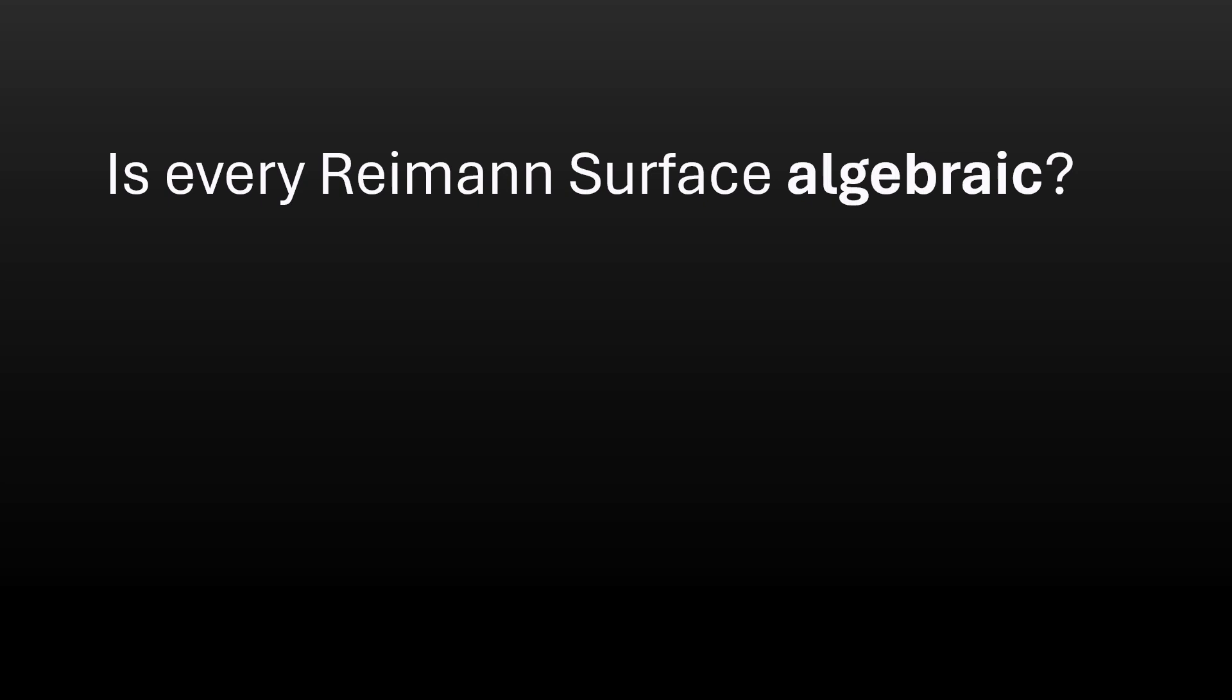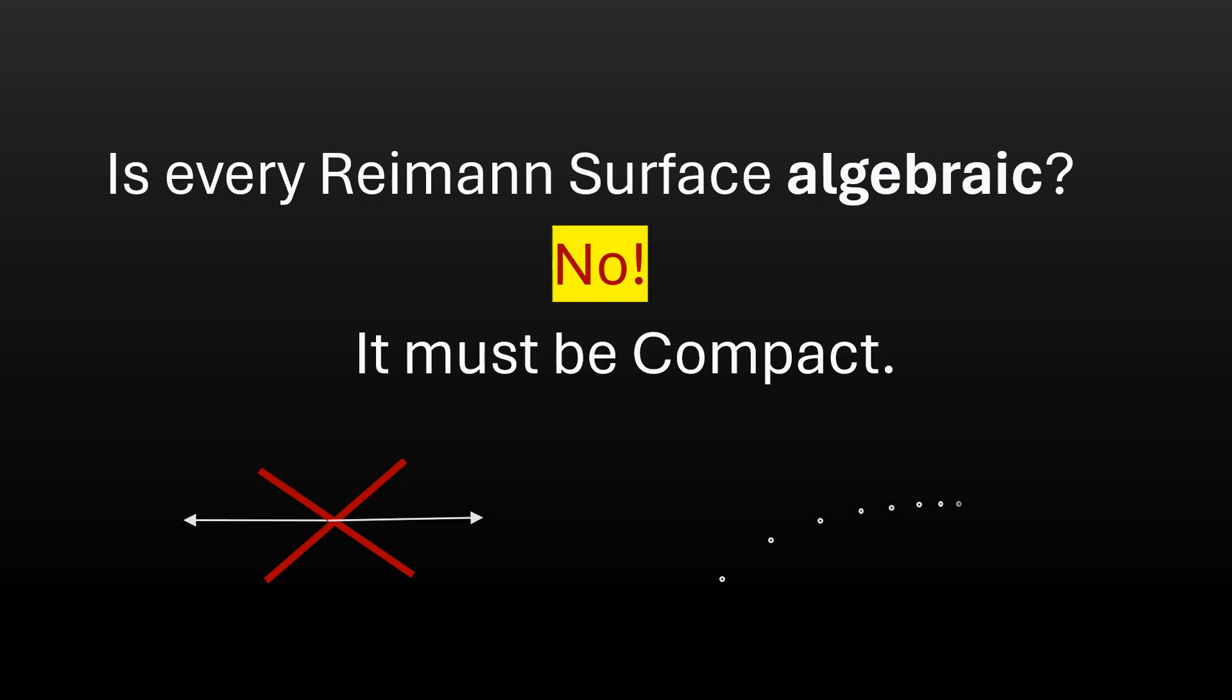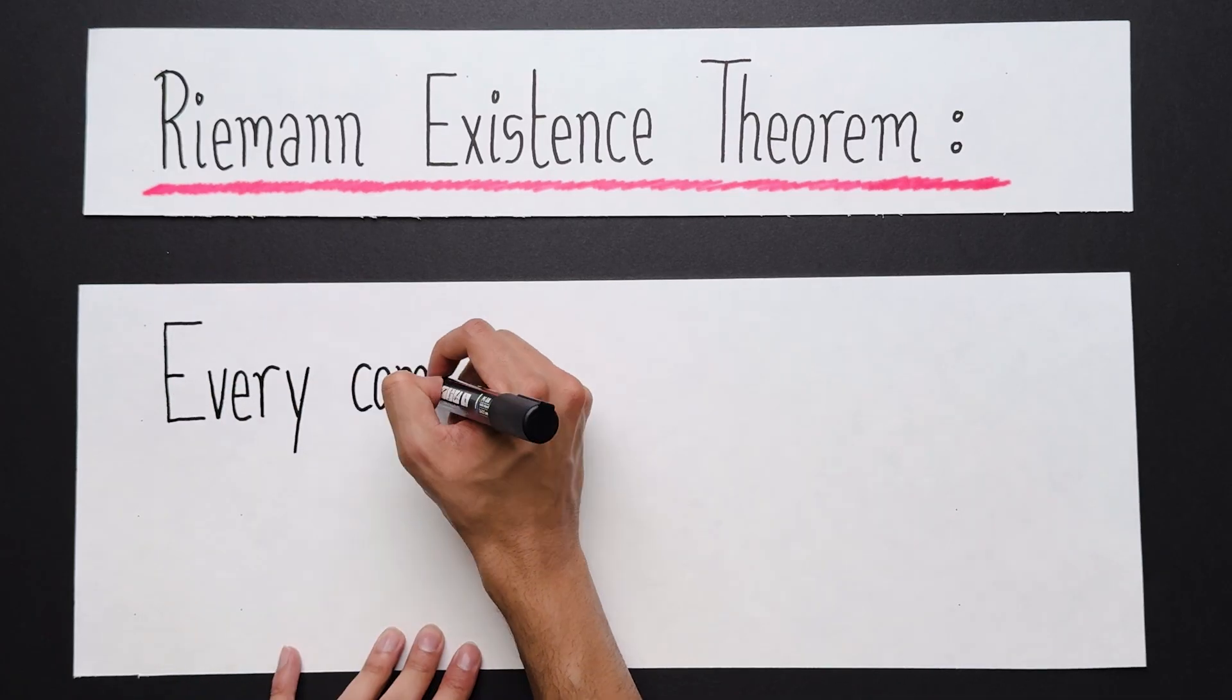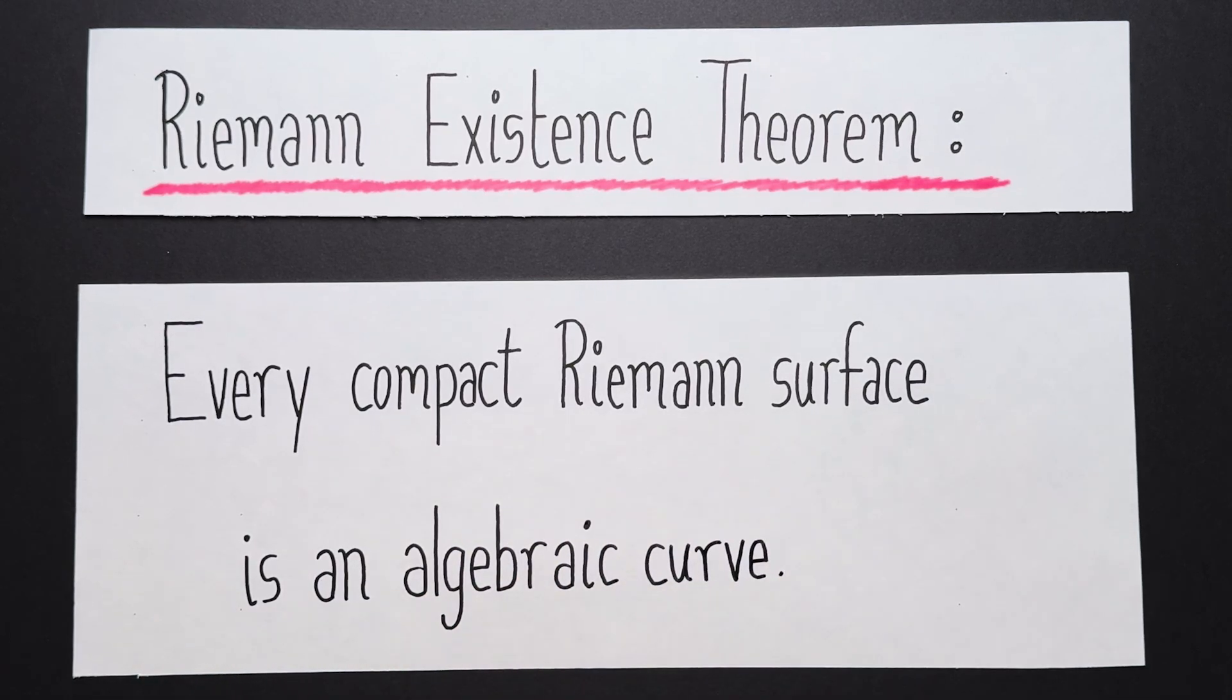It turns out that the answer is no. The Riemann surface must satisfy an extra condition. It must be compact. The rough intuition is that a compact space is a space that doesn't go off to infinity and it contains all of its limit points. But the upshot is, every compact Riemann surface is an algebraic curve.